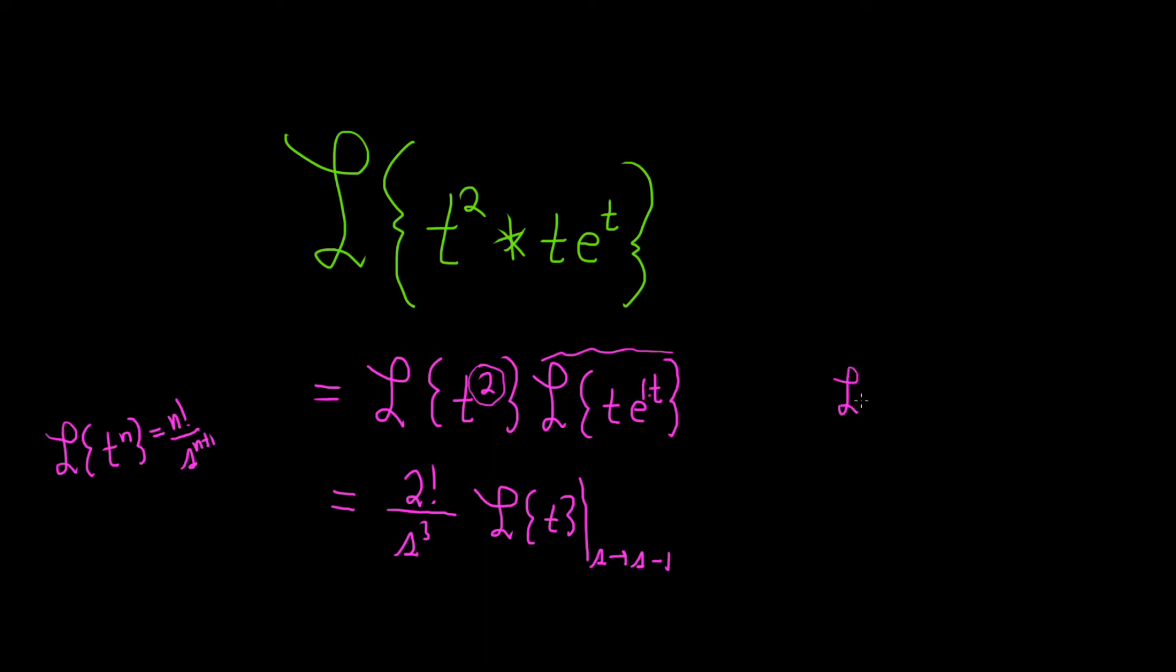So the rule, or the theorem says, if you have f(t) times e^(at), this is the same thing as the Laplace of f(t). And then you do a shift. You take s and you shift it to s-a. You translate it.